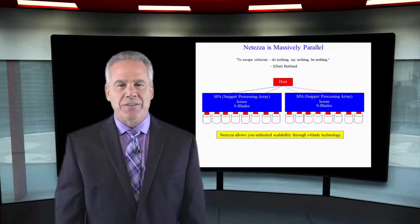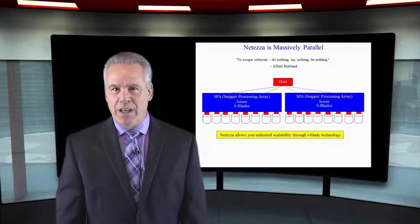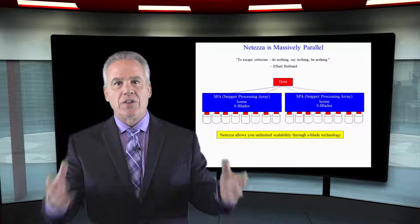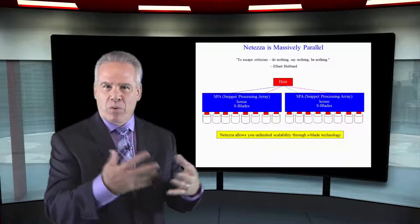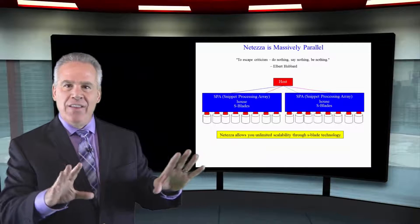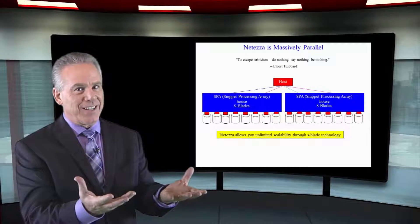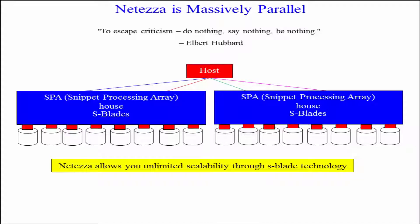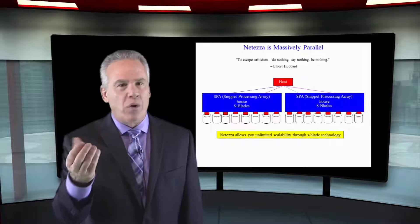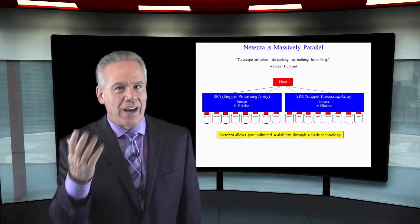One of the things that Netiza does very cleverly is it builds SPAs — Snippet Processing Arrays — and in those you'll house quite a few Snippet Processing Units. As you want to grow, you won't just call and say you want one more SPU. They'll say you've got 2,000 of them — want another SPA and a ton more SPUs? That's the way it's built, almost like in a building block fashion.